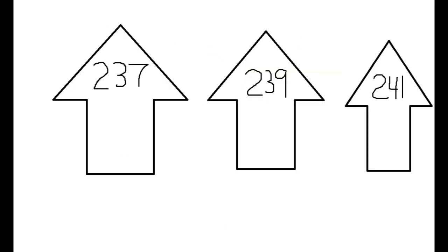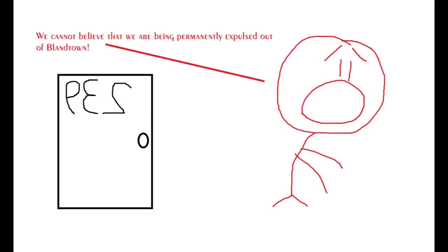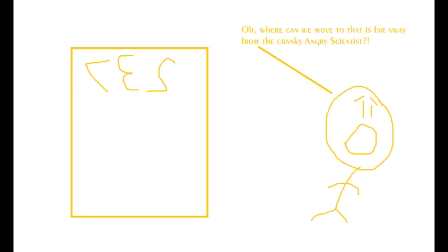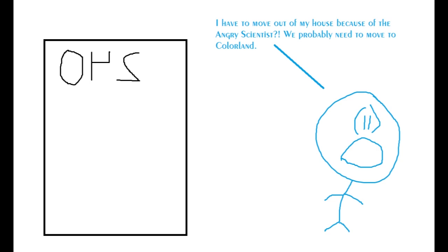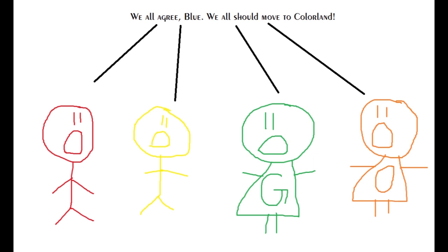A couple of hours later. We cannot believe that we are being permanently expulsed out of Blandtown, banned forever in Blandtown for eternity. Oh, where can we move to that's far away from the cranky, angry scientist? This plan didn't work in the first place. We need to escort ourselves out by the end of Wednesday at sundown. I have to move out of my house because of the angry scientist. We probably need to move to Colorland. Yeah, I definitely agree with you, Blue. We all should move to Colorland, which is 549 miles away from the angry scientist. We all agree, Blue. We all should move to Colorland.